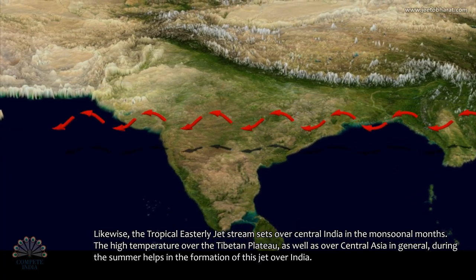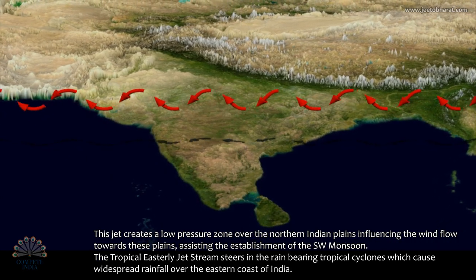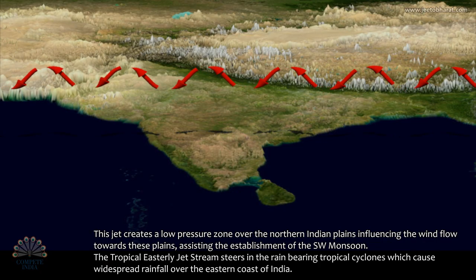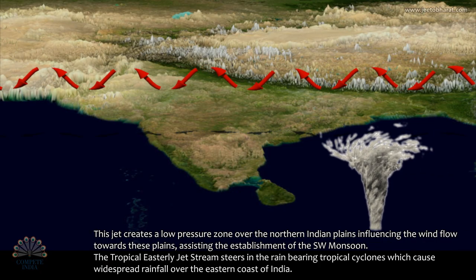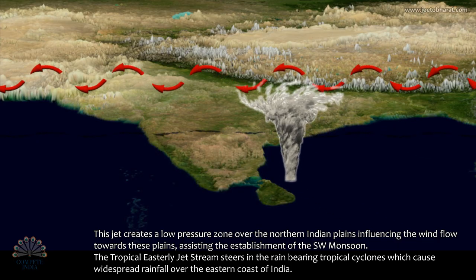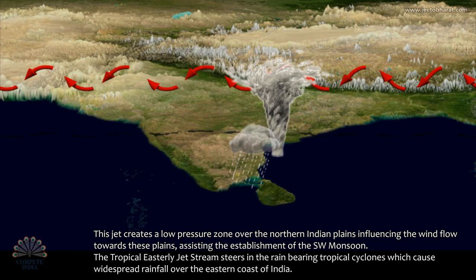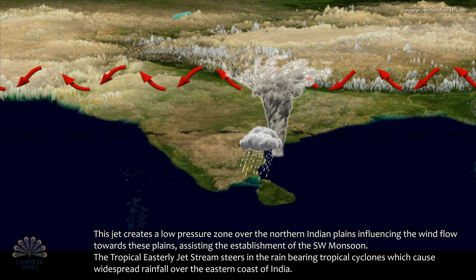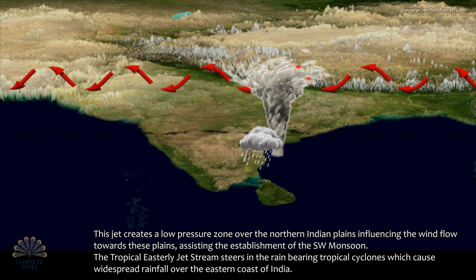The tropical easterly jet stream creates a low-pressure zone over the northern Indian plains, influencing the wind flow towards these plains and thus assists in the establishment of the southwest monsoon. The tropical easterly jet stream also steers in the rain-bearing tropical cyclones, which cause widespread rainfall over the eastern coast of India.